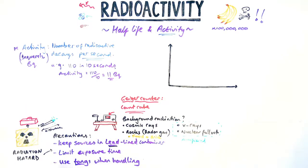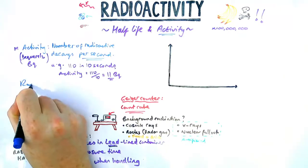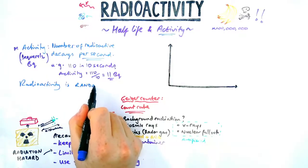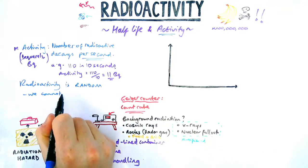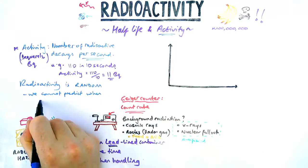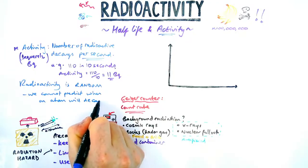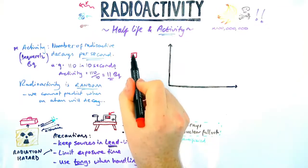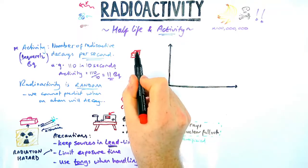Now before we have a look at half-life, a really important note to take care of here is that radiation or radioactivity is a random process. Random meaning we do not know or we cannot predict when an atom will undergo decay. However we can, if we had enough of them, know a certain amount will decay by a certain time.